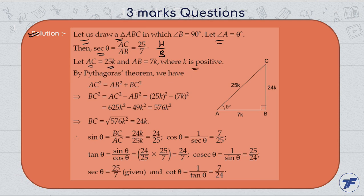Let AC = 25k and AB = 7k where k is positive. By Pythagoras' theorem, we have BC² = AC² - AB² = (25k)² - (7k)² = 625k² - 49k² = 576k². So BC = √576k² = 24k. Now we can find the value of all trigonometric ratios.